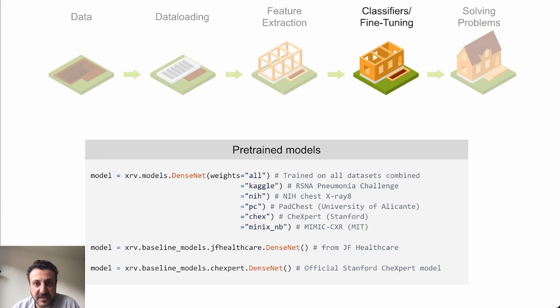Shown here is how to load DenseNets that were trained on multiple different data sets. This is useful for studying data set bias. Baseline models from JF Healthcare as well as the official CheXpert model are also provided. All of these models take input images with the same normalization.